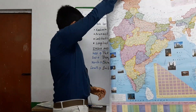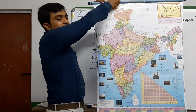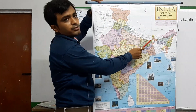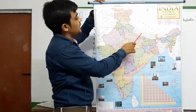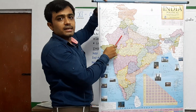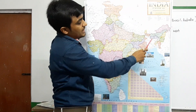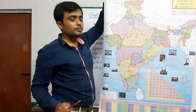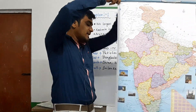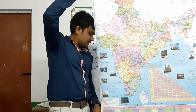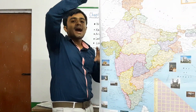Now I will give you some basic information about our neighboring countries. In the north, China, Nepal, and Bhutan are three neighboring countries of India. In the west, Pakistan and Afghanistan are neighboring countries. In the east, Bangladesh is a neighboring country. In the south, there are two island countries — Sri Lanka and Maldives — situated in the Indian Ocean. Sri Lanka is divided from India by the Palk Strait.